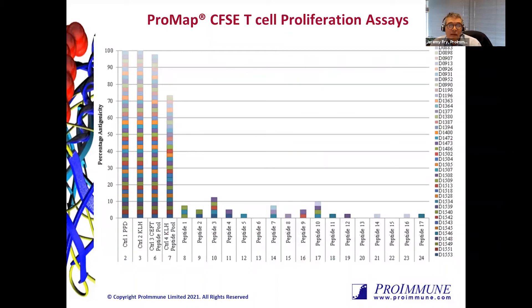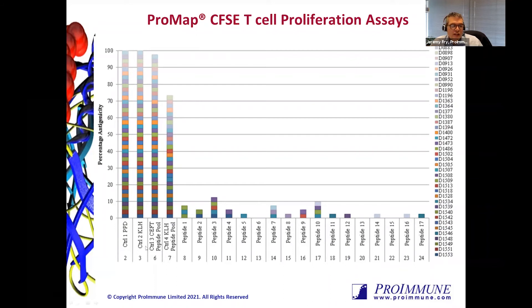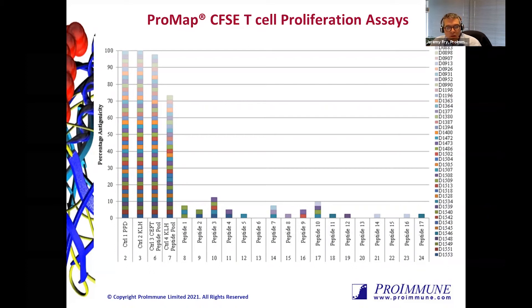We perform a number of controls: an unstimulated control as background, and positive controls including tuberculin PPD and keyhole-limpet haemocyanin — two protein controls that drive a memory and a naive response respectively. We also have a CEFT peptide pool (CMV, EBV, flu, and tetanus peptide pools) and a KLH peptide pool, which are peptides identified as naturally processed and presented from KLH using the ProPresent MAPS assay. Every color across the data represents a specific donor. If you see a response in three or more donors in your cohort, it's something which needs to be looked at in more detail in respect to a potential unwanted T-cell response.